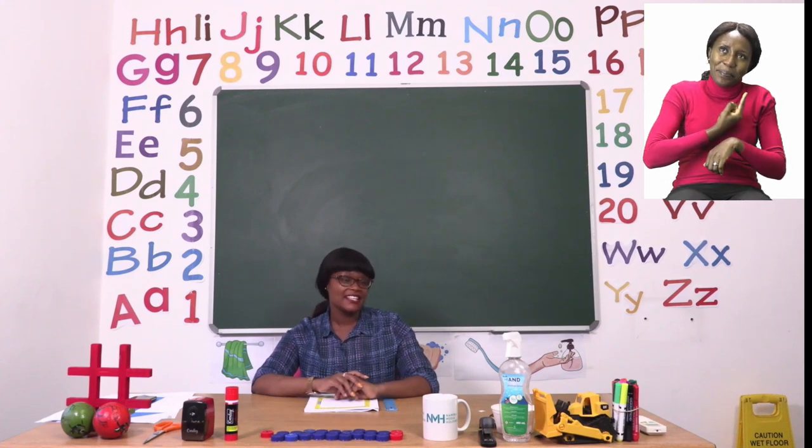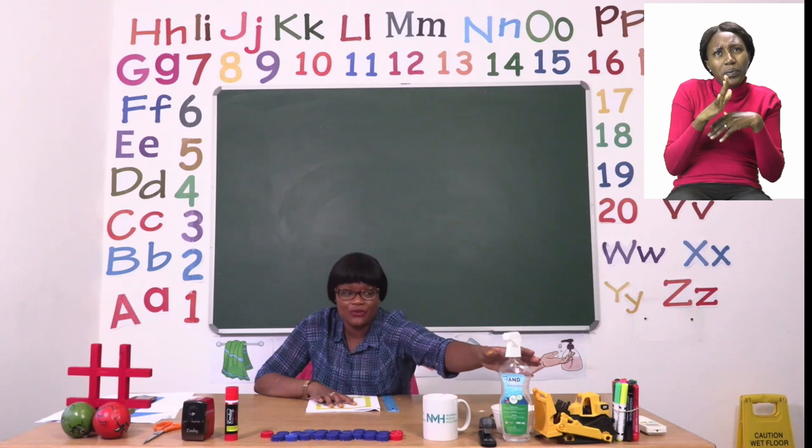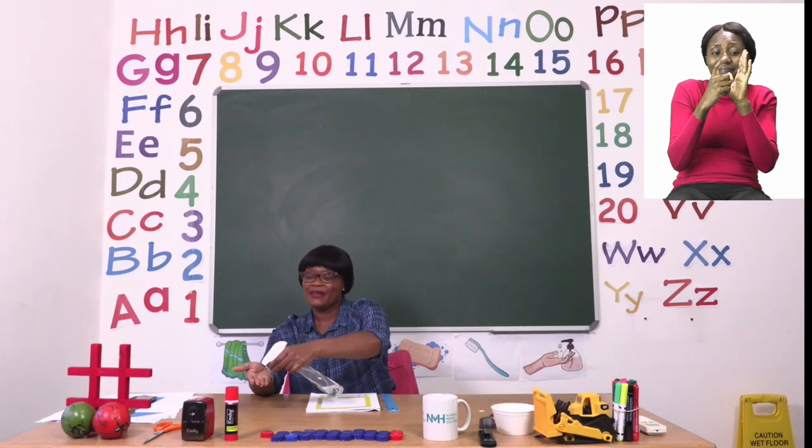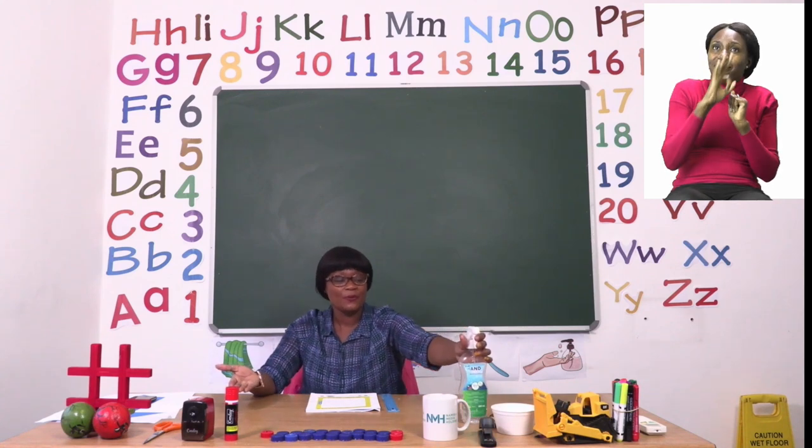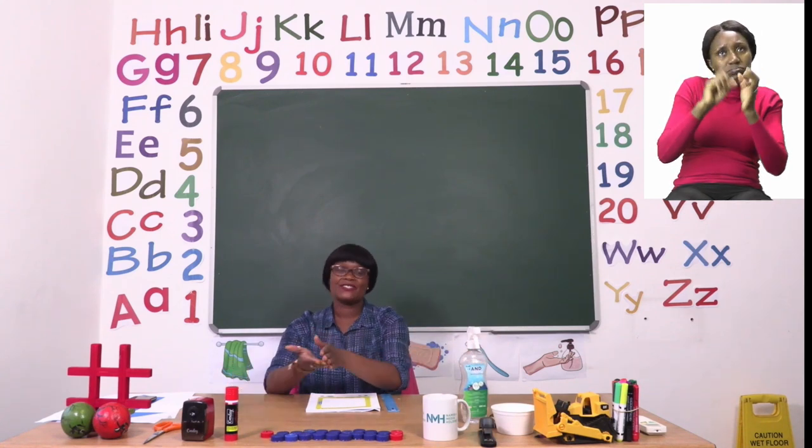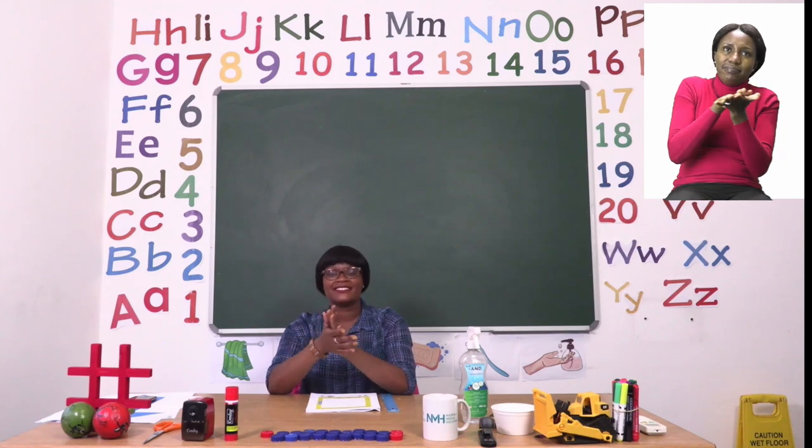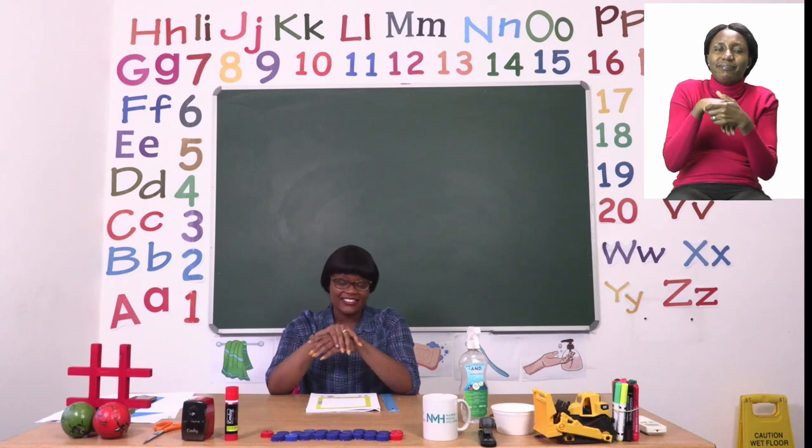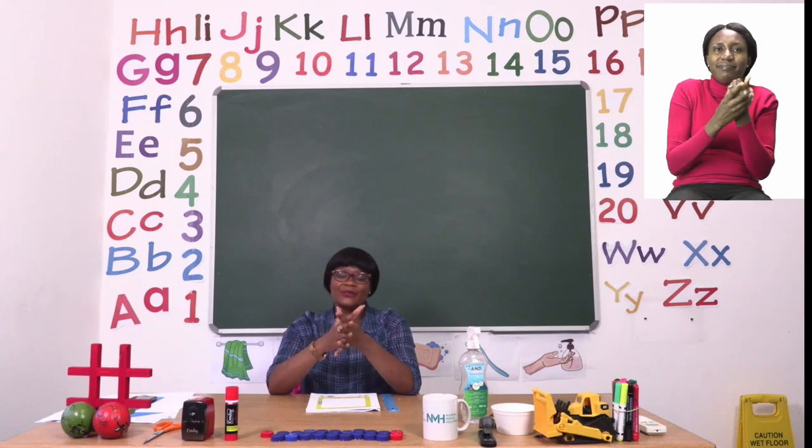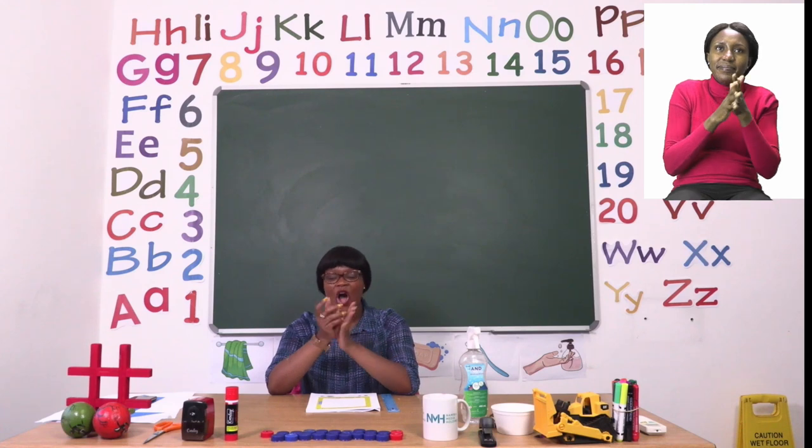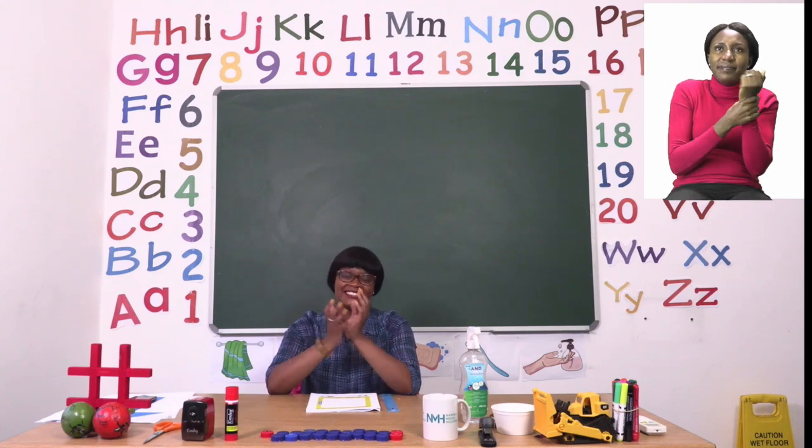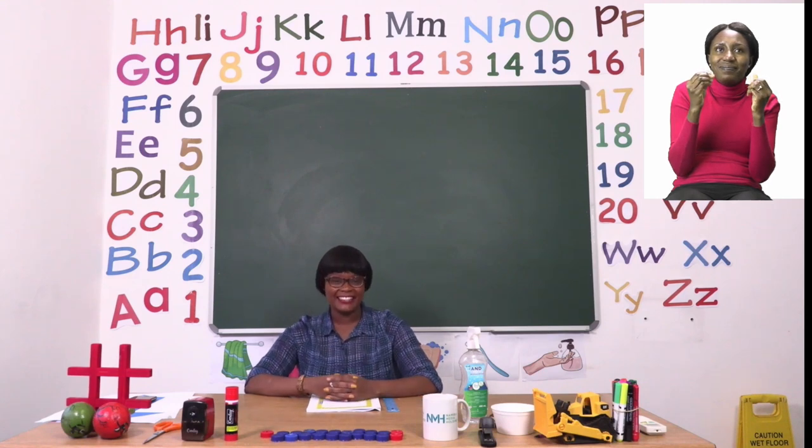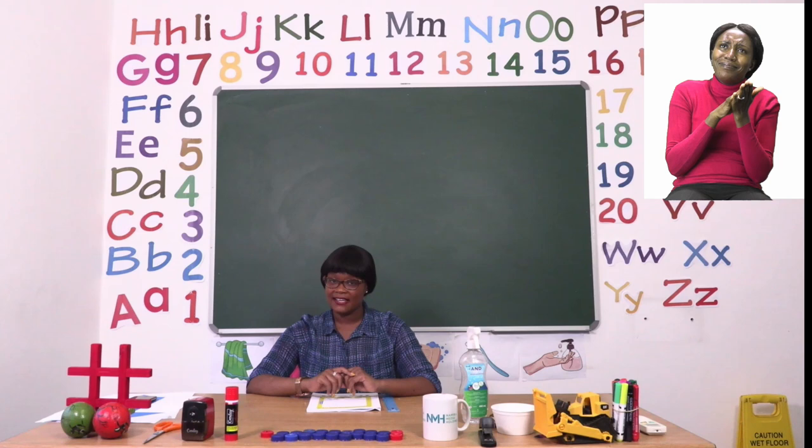So now that we're done with our lesson, it's important for us to sanitize. Do you remember how we sanitize? I'm sure you do remember. If you don't have sanitizer, you can always use soap and water. So we start by rubbing inside our hands, very good, around our hands, good, in between our fingers, on our wrists, and our fingertips too. Well done. Make sure your hands are dry before you touch anything else.